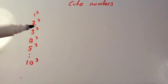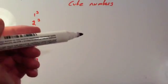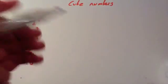So remember the square numbers were 1, 4, 9, 16, 25, 36, 49, 64, 81 and 100 and so on.